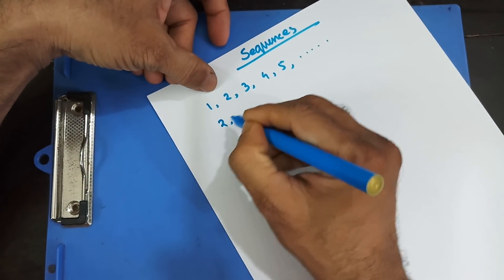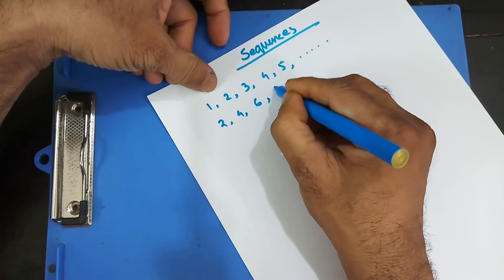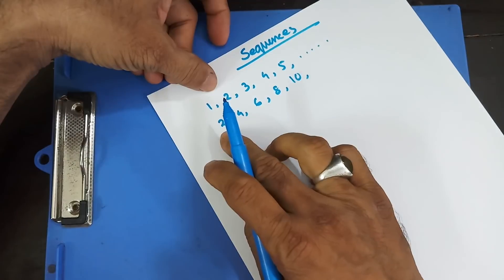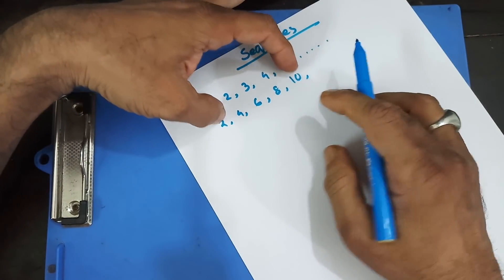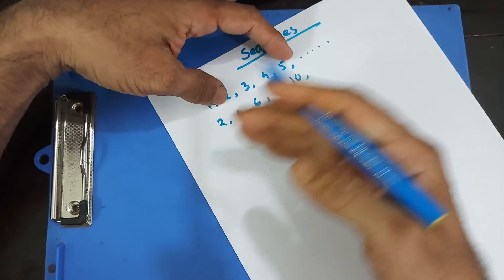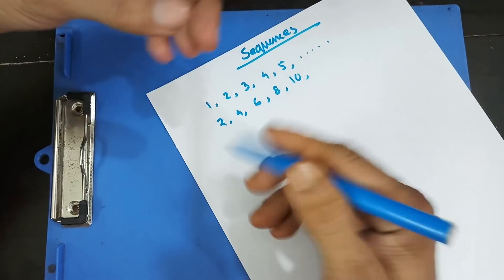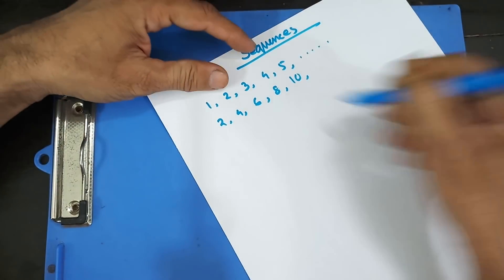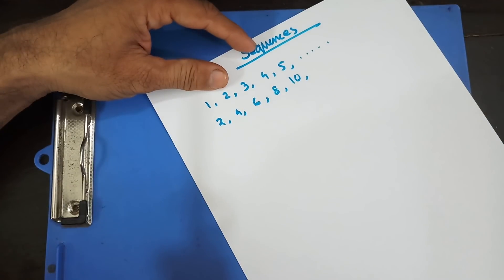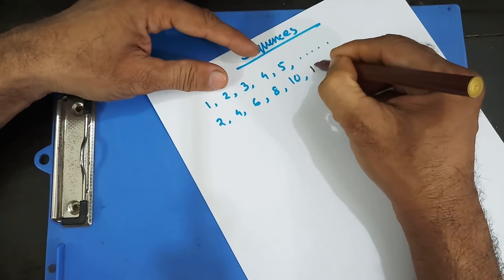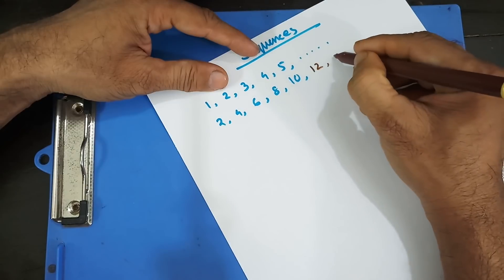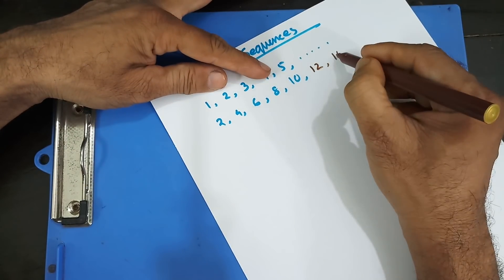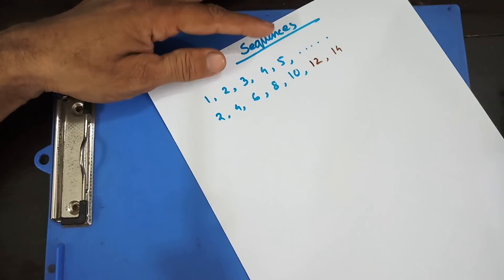If you have 2, 4, 6, 8, 10, then you know this is a sequence — a pattern of numbers where all the even numbers are there, or the difference between two numbers is 2. So the following number should be 12, and after that it's going to be 14. You add 2 each time to get the next one.